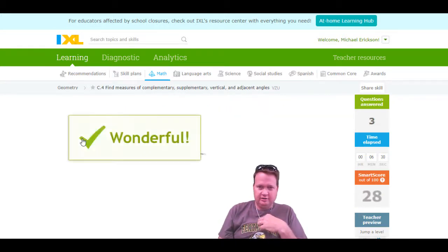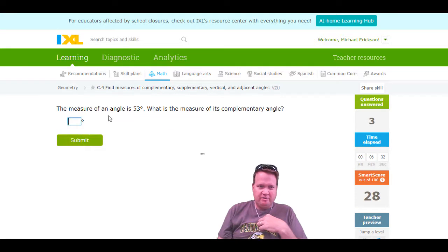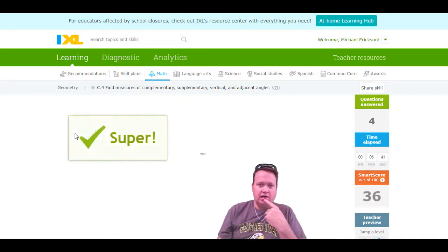Look at this, we're already cruising. We're at 28. The measure of an angle is 53. Its complement means it adds up to 90. That's going to be 37 degrees. And look at that, we're at 36.